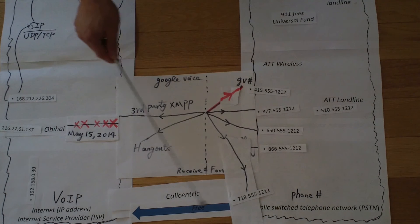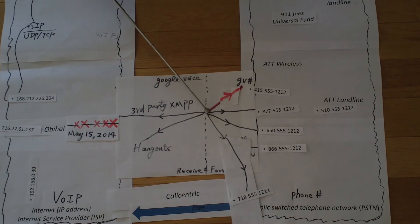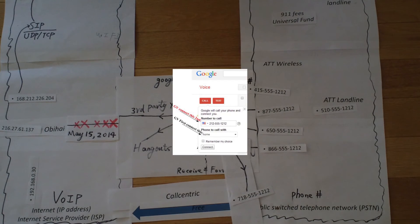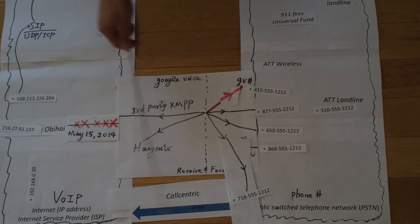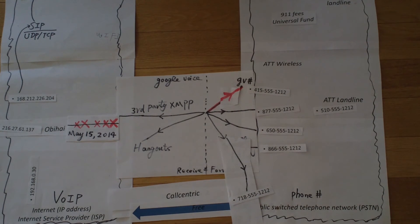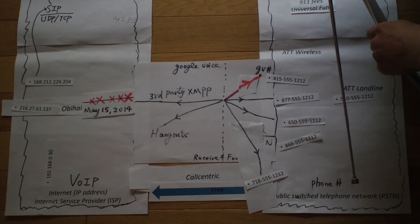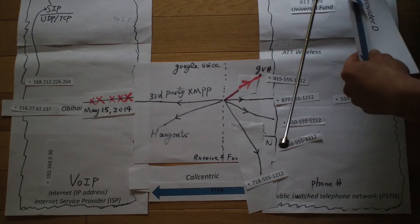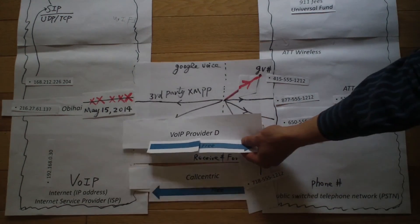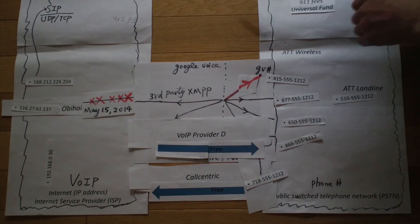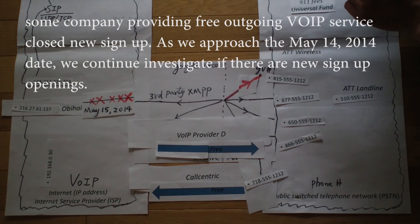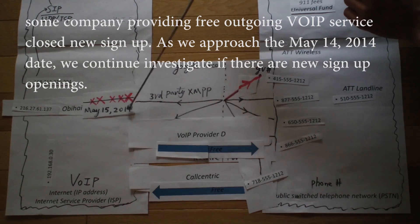Once you pick up the OBi device, the Google interface will dial a second line, which is the outgoing line. That way, it connects the two lines from the OBi device to the person you want to dial. The disadvantage of this is you have to open your browser to make an outgoing call. If you don't want to turn on your computer to use a browser, you could investigate services that provide outgoing dialing for free. There are some services, but they are closed for new sign-ups as we approach this deadline.